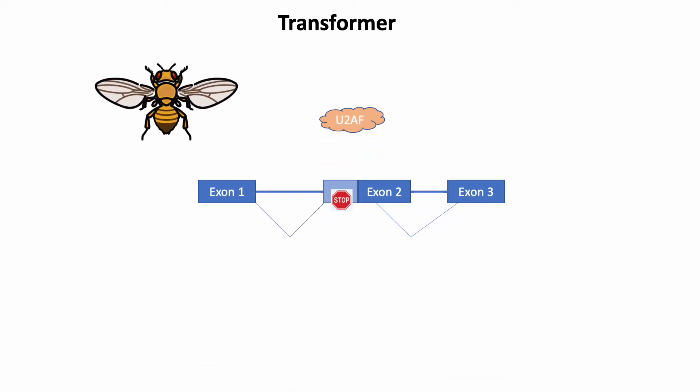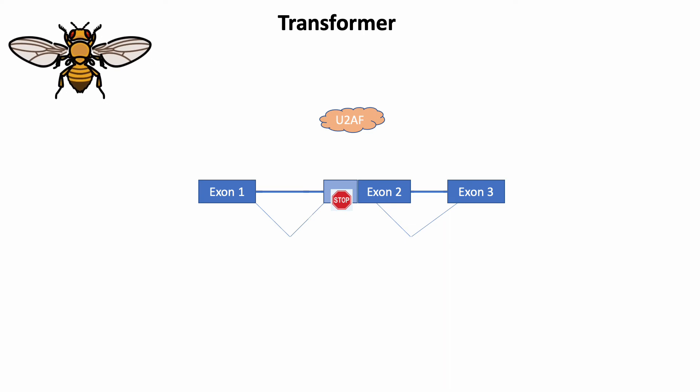Similarly, sex-lethal also enforces the alternative splicing pattern of the transformer transcript. For the males, the splicing factor U2AF binds to the polypyrimidine tract on the 3' end of the transformer intron ahead of its second exon. This promotes the splicing at the proximal site of the second exon, which will lead to the inclusion of a premature stop codon in the male mRNA.